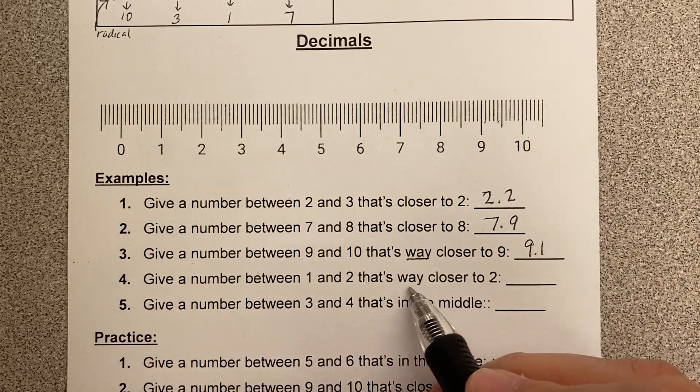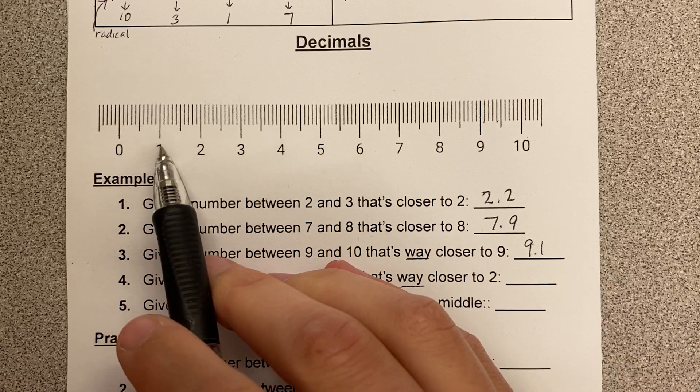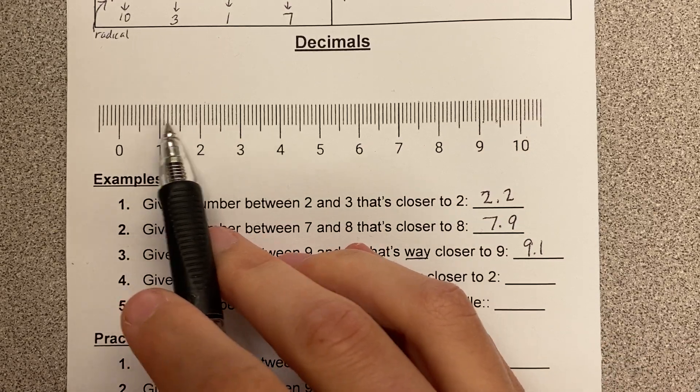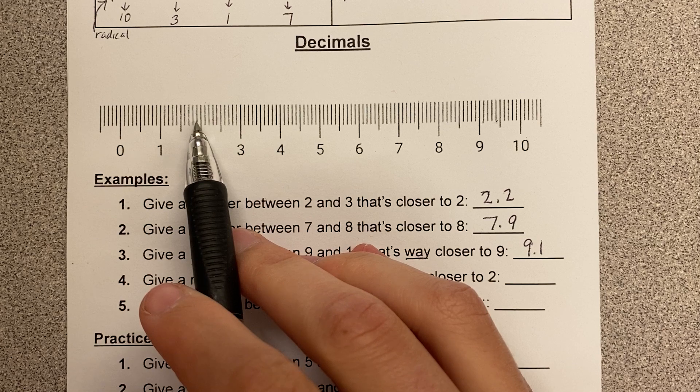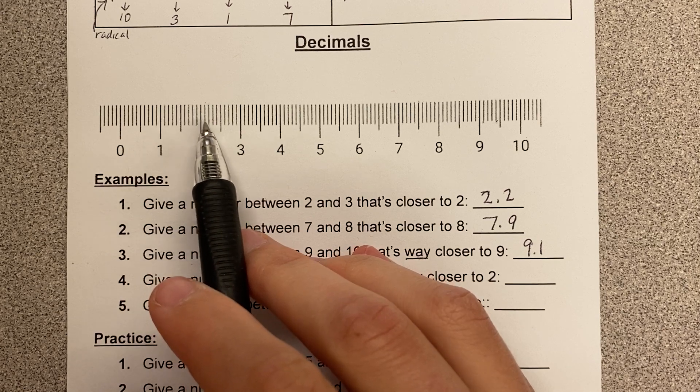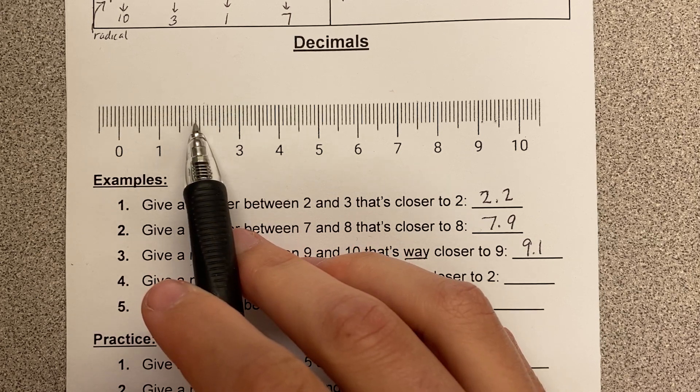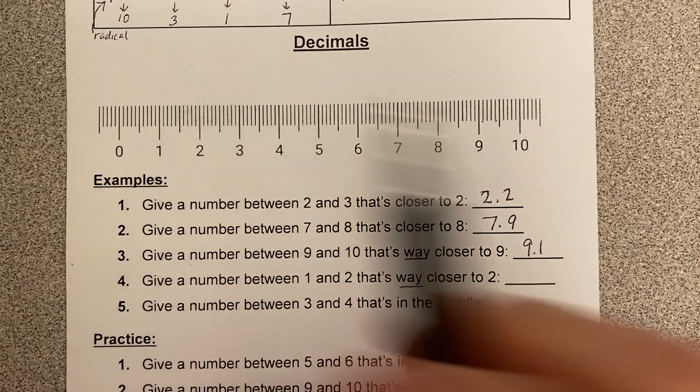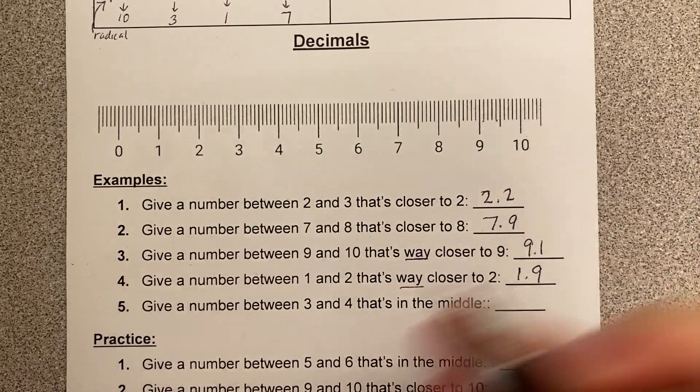A number between 1 and 2 that's way closer to 2. So look, in between 1 and 2, way closer to 2. What's this number? Okay, careful. It's not 2.1. 2.1 is over here in between 2 and 3. This number is 1.9.